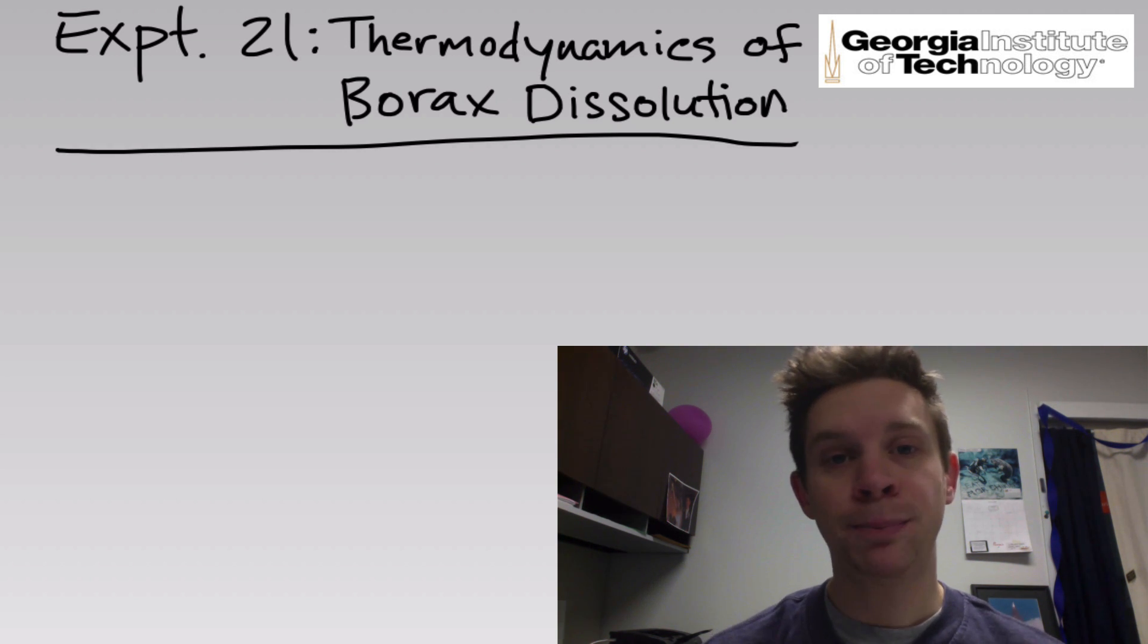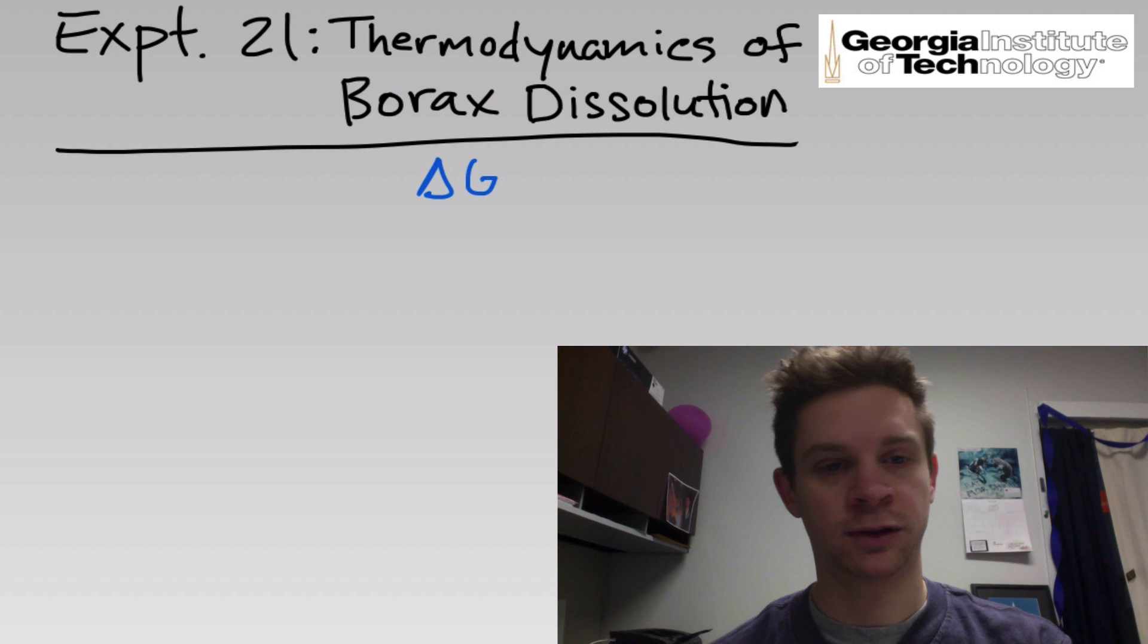There will be three big parameters that we're interested in determining for this process, and that's delta G, which is the change in free energy associated with solvation, delta H, which is the change in enthalpy, and delta S, which is the change in entropy.